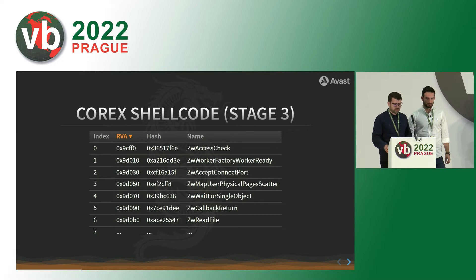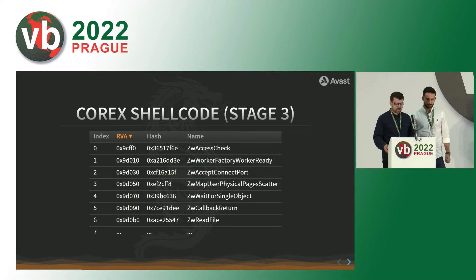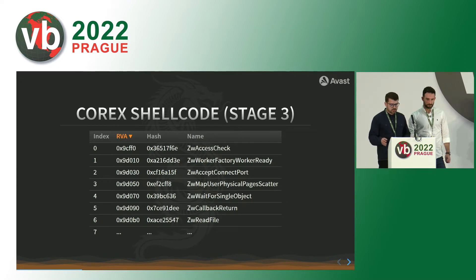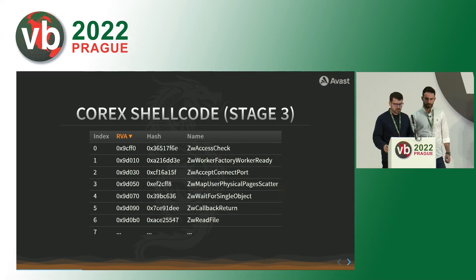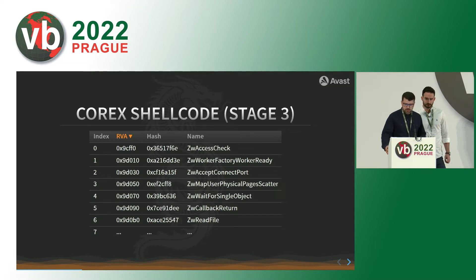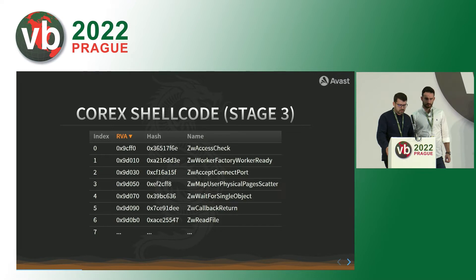They sorted this array by RVA. By doing so, they exploited the fact that the order of RVAs of ZW functions equals the order of corresponding syscalls. So an index in this array is basically a syscall number, which can be called directly with the syscall instruction. By doing so, you can bypass some security products based on hooking APIs in user space.